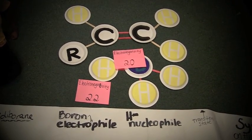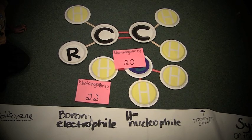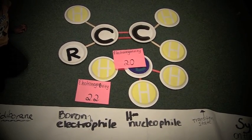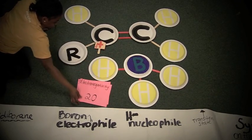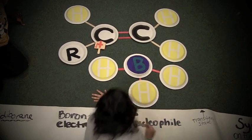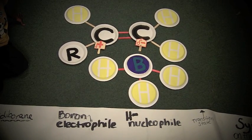This makes the boron the electrophile and the negatively charged hydrogen the nucleophile. The hydrogen is going to be attracted to the more substituted carbon which has a relative positive charge and is more stable. The boron is going to be attracted to the least substituted carbon of the alkene.